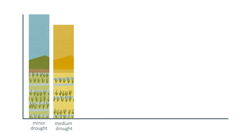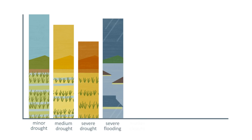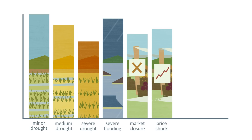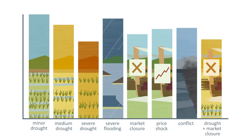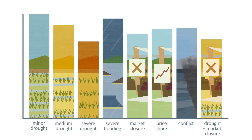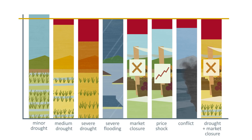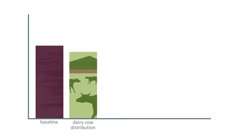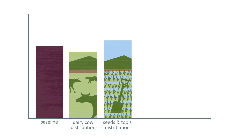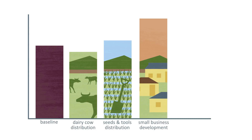HEA can model the effects of different scenarios — for example, different severities of drought, floods, a market closure, a price shock, a conflict, or even a combination of these. This means we don't have to wait until a disaster happens to predict what the deficit will be. HEA modelling isn't limited to negative scenarios; different types of programme interventions can be modelled too. This means we can predict which programme will have the most positive economic impact on households, and show any negative unintended consequences before the programme has started.